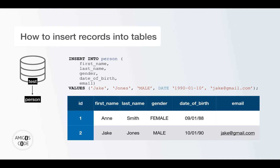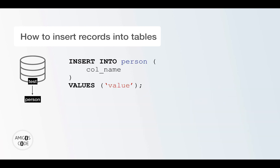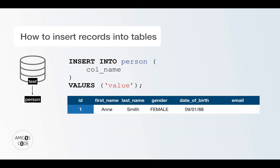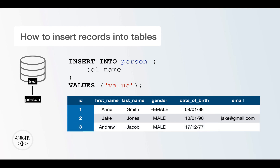As you can see, I'm not specifying the actual ID column. This is because the BIGSERIAL data type does an auto-increment for us, which means we don't have to manage this ID. So if we insert more people into this table, we simply get the ID managed for us, being auto-incremented — so you'll get one, two, three, four, and so on and so forth.